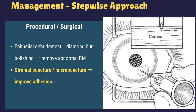The second option is anterior stromal puncture, done for recurrent erosions but only outside the visual axis. Tiny punctures are made in the Bowman's layer and superficial stroma, encouraging stronger adhesion points between the epithelium and stroma. Remember: do not attempt this in the central cornea as it can cause visual disturbances.